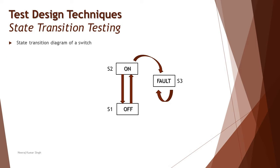Let's take a real-time example: an electrical switch. The switch has two major statuses — on and off, considered as S1 and S2. Due to a short circuit, a switch can also result in a faulty state, S3. People generally think there are only two test cases — on to off and off to on — but presenting the switch as a state transition diagram reveals there is also a valid transition where the switch moves from the on state to the faulty state.